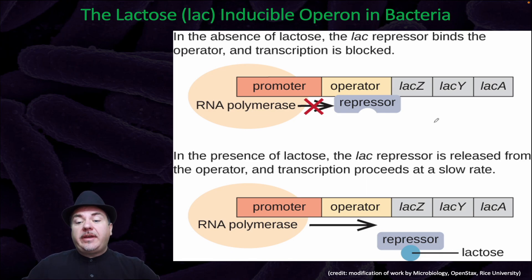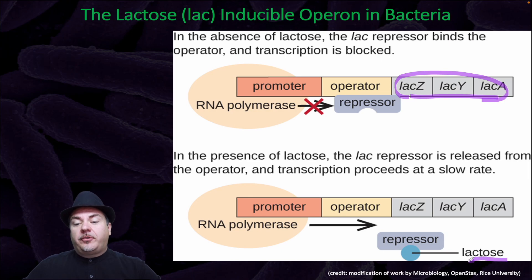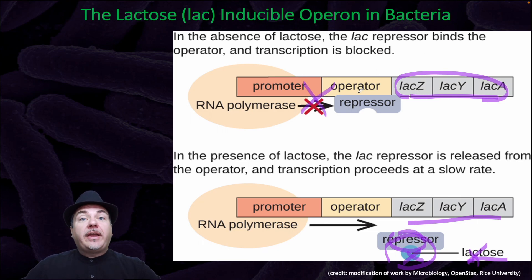The lac operon is a really elegant system because what these genes encode are enzymes that break down lactose. If there's no lactose present, you don't need to make these enzymes because they'll serve no purpose without their substrate. When lactose is present, it turns off the repressor, which turns on the genes, so the genes make the enzymes that break down the lactose. Once the lactose is broken down, you no longer have lactose — it turns the repressor back on, which turns the operon back off. Whenever lactose is available, the genes are turned on to break it down; whenever it's not available, the genes are turned off.